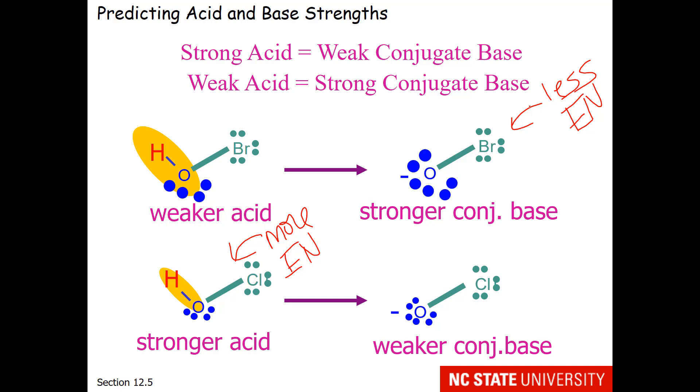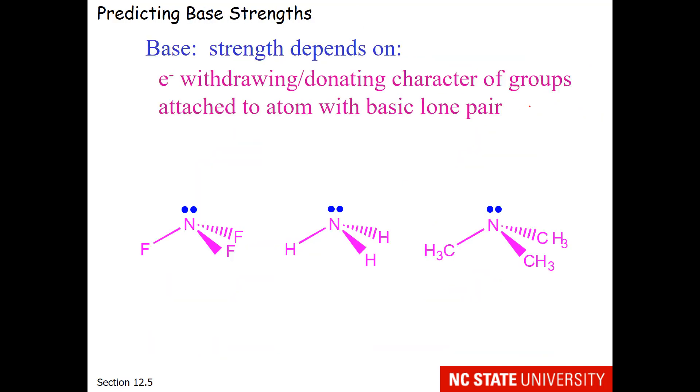I want to talk about a special series based on ammonia. This is your introduction to organic chemistry where you can think about electron withdrawing and electron donating character of groups. So what I have is a series where ammonia is in the middle and I have substituted the hydrogens with fluorines on the left and with methyl groups or CH3 groups on the right.